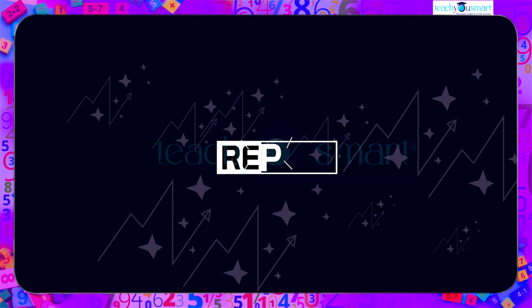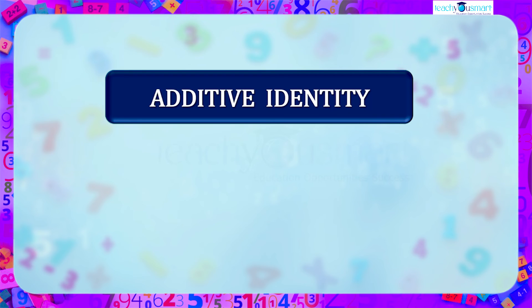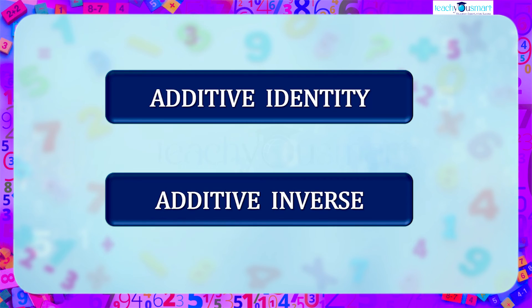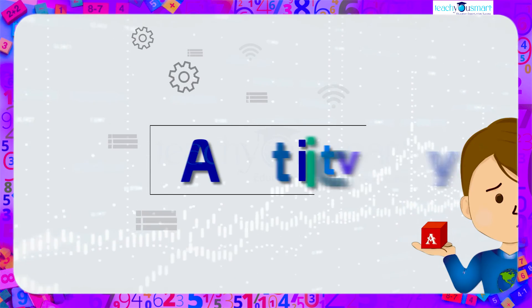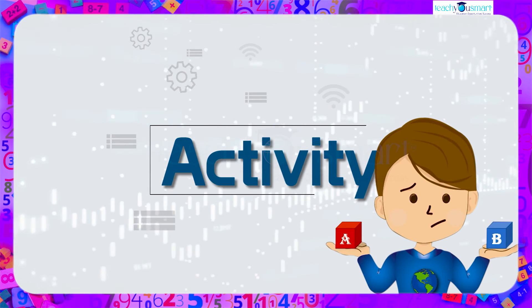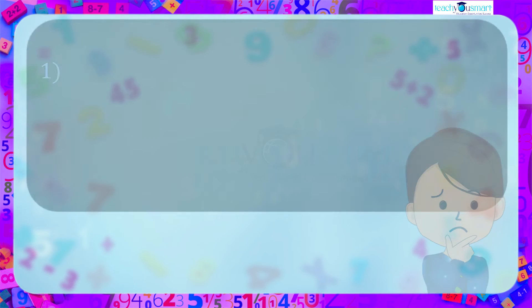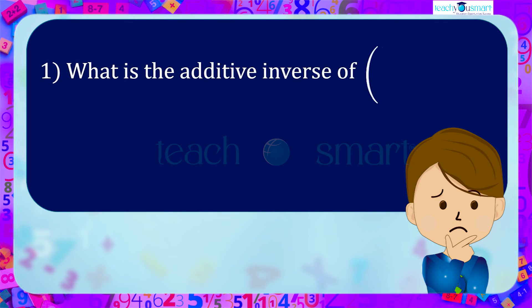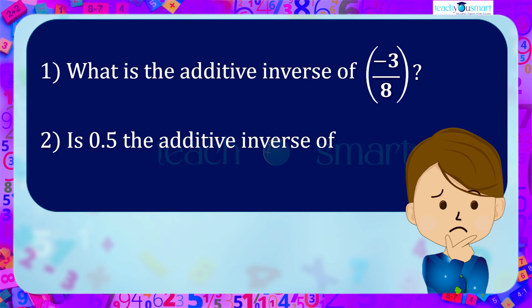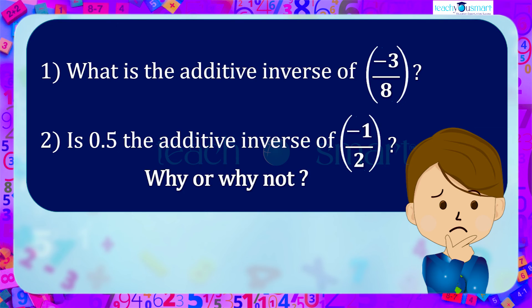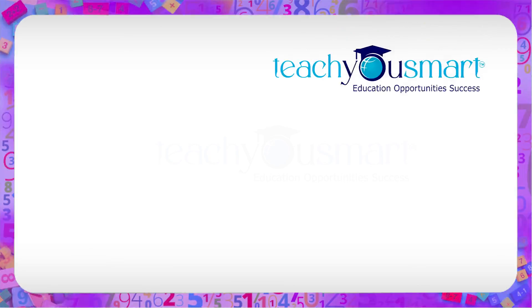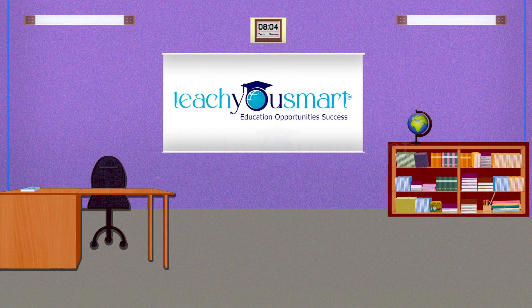Let's recall what we discussed today: additive identity and additive inverse. Before winding up, let's check how much you understood by doing an activity. One: what is the additive inverse of minus three by eight? Two: is 0.5 the additive inverse of minus one by two — why or why not? That's all for now, see you all in the next class.